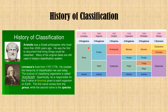Here we have a timeline of scientists who have classified living organisms. Carolus Linnaeus in 1735 gave the two-kingdom classification, dividing all living organisms into plants and animals. In 1866, Haeckel gave a three-kingdom classification: protist, plants, and animals. In 1925, Chatton gave two empires of organisms — prokaryotes and eukaryotes.